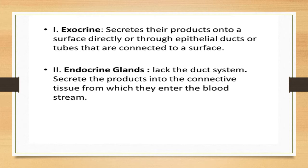Endocrine glands do not have a duct system. They secrete their products into the connective tissue, from which they enter the bloodstream and are carried to distant areas. Examples include the thyroid gland, the ovarian glands, the suprarenal glands, and the pituitary gland — all secreting their products into the bloodstream.